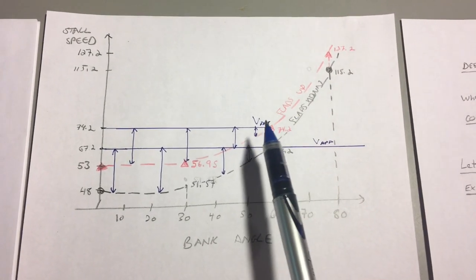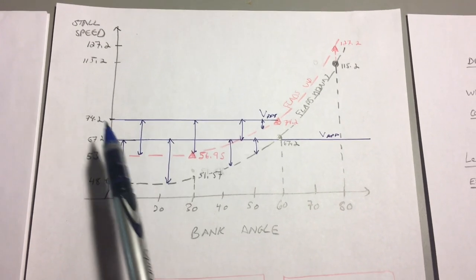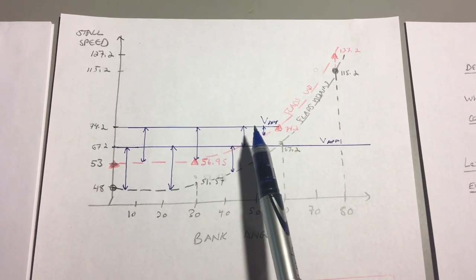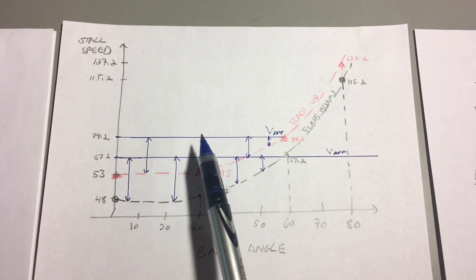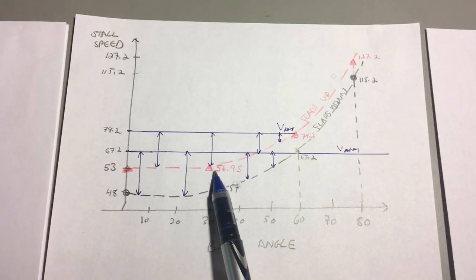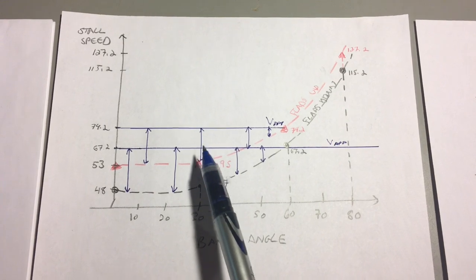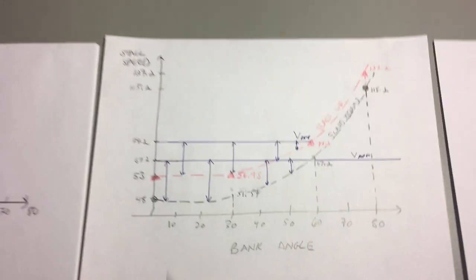We can look at the same type of situation when we compare the upper blue line, which is the approach speed in the clean configuration with the flaps up, and how far down we have to go from this curve until we hit the red line at any given bank angle tells us how many knots of airspeed we can lose before we stall the airplane.